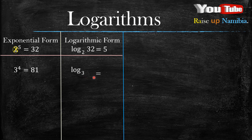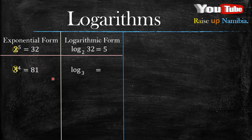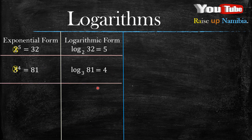Write your equal sign. Now this base is already written so ignore it, and check: 4 is on the left-hand side of the equation. We'll swap it and take it to the right-hand side, while 81 that is on the right we take to the left. So we take 81 to the left-hand side and the 4 to the right-hand side. And just like that you have changed this exponential form into logarithmic form.